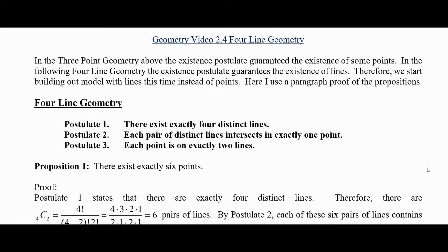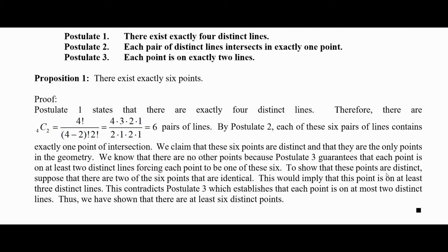So the first proposition is there exists exactly six points. Here's the proof. Again, I use a paragraph form here. Postulate one states that there are exactly four distinct lines. Therefore there are four choose two, that is six pairs of lines. It's just a counting thing. By postulate two, each of these six pairs of lines contains exactly one point of intersection.